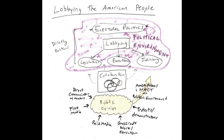Grassroots work and education is also a way of directly communicating with non-members. You get out into the community — grassroots work and education can be door-knocking, pamphleteering at the local grocery store or mall, holding seminars and classes, or having free events. Protests and demonstrations are also connected to the idea of grassroots work and education. Protests have an educational function as well as a protest function. So these methods are all connected to each other — they're not identical, but they have strong connections.